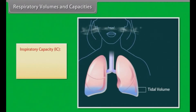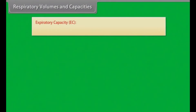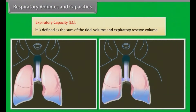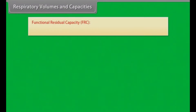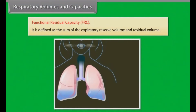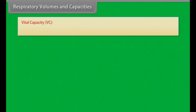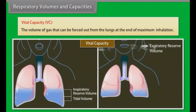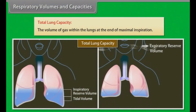Respiratory Volumes and Capacities continued. Inspiratory Capacity (IC): Defined as the sum of the tidal volume and inspiratory reserve volume. Functional Residual Capacity (FRC): Defined as the sum of the expiratory reserve volume and residual volume. Vital Capacity (VC): The volume of gas that can be forced out from the lungs at the end of maximum inhalation. Total Lung Capacity: The volume of gas within the lungs at the end of maximum inspiration.